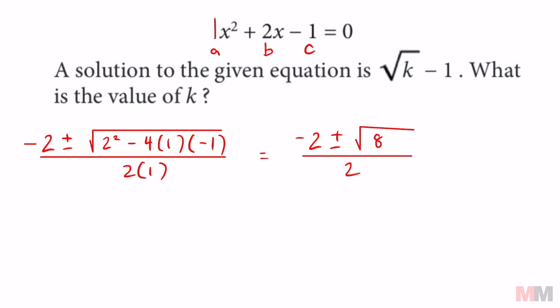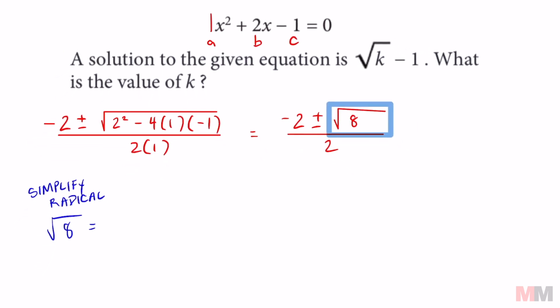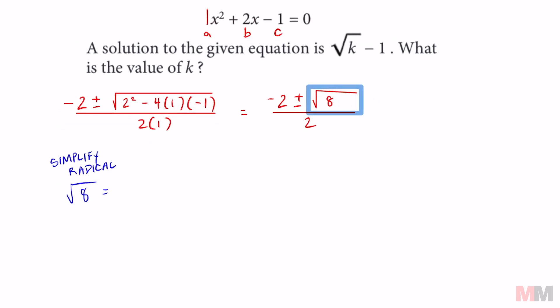The second thing you got to know about this question is that you have to know how to simplify that discriminant, how to simplify radicals. So let's take this square root of 8 on the side. The square root of 8, you're going to have to think of factors of 8 that are perfect squares. So square root of 8 can be written as the square root of 4 times the square root of 2.